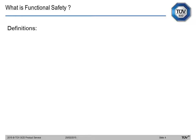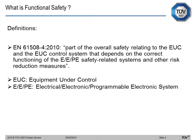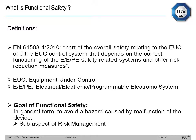Let's start with the definition of functional safety. Looking at the standard part 4, it is defined as part of the overall safety relating to the equipment under control that depends on the correct functioning of the electrical, electronic, programmable electronic system, safety-related system, and other risk reduction measures. More importantly, the goal is to avoid a hazard caused by malfunctioning of the device, and because of that, it is strictly correlated to risk management.